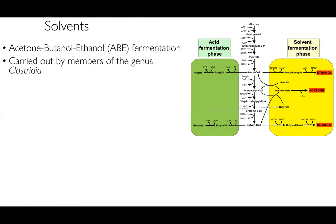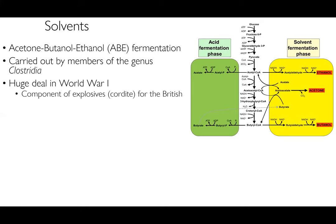We also use microbes to produce solvents — acetone, butanol, ethanol, or ABE fermentation — carried out by members of the genus Clostridia. Starting with sugar, you go through glycolysis to produce pyruvate, then convert it to acetyl-CoA, and through a pathway produce acetate or ethanol. You can continuously transform it into different compounds, eventually making acetone, and keep going to produce butanol or butyrate. This was actually a huge deal in World War I, where ABE fermentation was used as a component of explosives for the British.